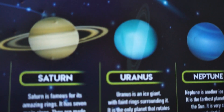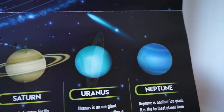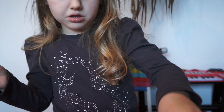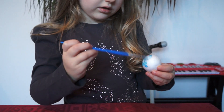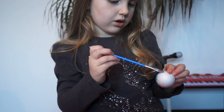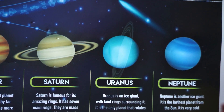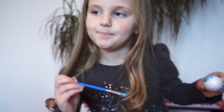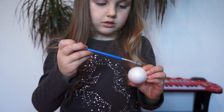The next planet is Uranus. What color is Uranus? A very nice blue! Uranus is an ice giant with faint rings surrounding it. It is the only planet that rotates on its side — you can see it has some ice rings. You will paint it all nice and blue.